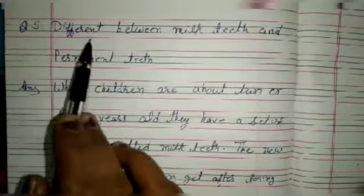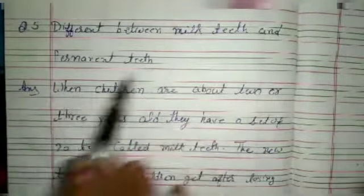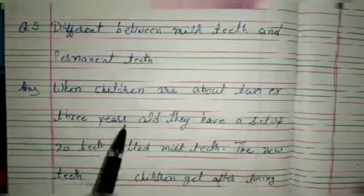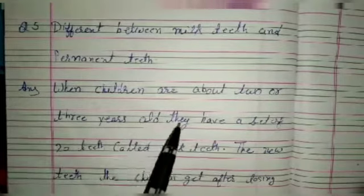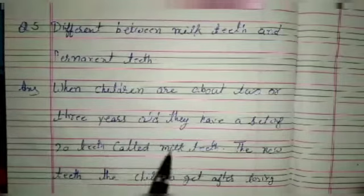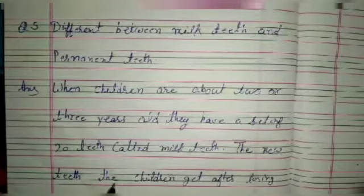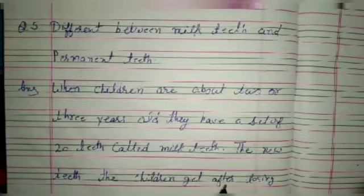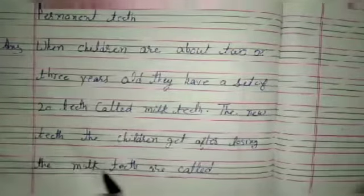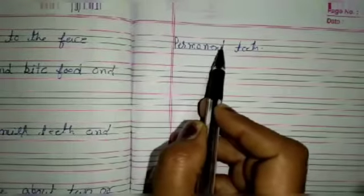Fifth question is the difference between milk teeth and permanent teeth. Answer is when children are about 2 or 3 years old they have a set of 20 teeth called milk teeth. The new teeth that children get after losing the milk teeth are called permanent teeth.